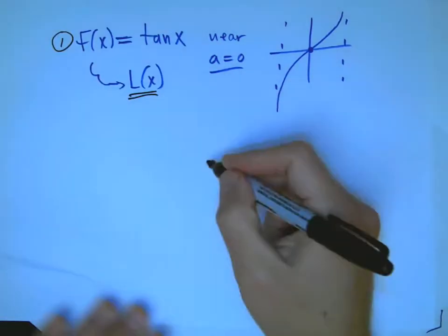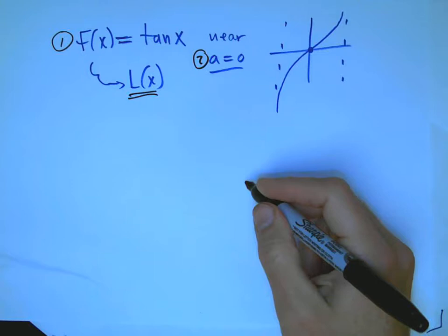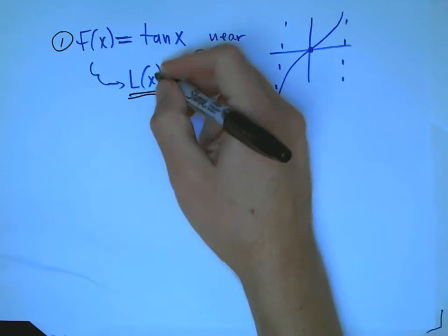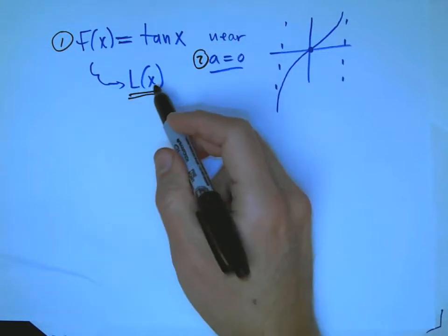And then we're going to get our general formula. And then whatever x we care about that's near a, we would be able to plug that in. And we're going to then do something a little more interesting with this, a bit testing how good this approximation is.